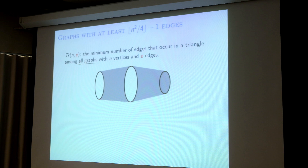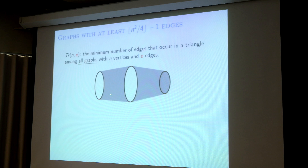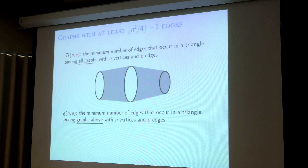I don't care about the sizes of these three parts. For example, if the complete part is zero, it is just a bipartite graph. And if both white parts are zero, it is a clique. So it is quite a general family of graphs. I say let g(n, e) be the same question — meaning the number of edges that occur in a triangle — but instead of all graphs, I look only at graphs of this construction, with a fixed number of vertices and fixed number of edges. Because tr(n, e) is among all graphs, it is definitely less than or equal to g(n, e).